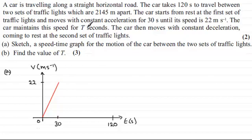Then we're told that the car maintains this speed for t seconds. If I come down on the graph to the 30 here, let's move it across a bit, just there.